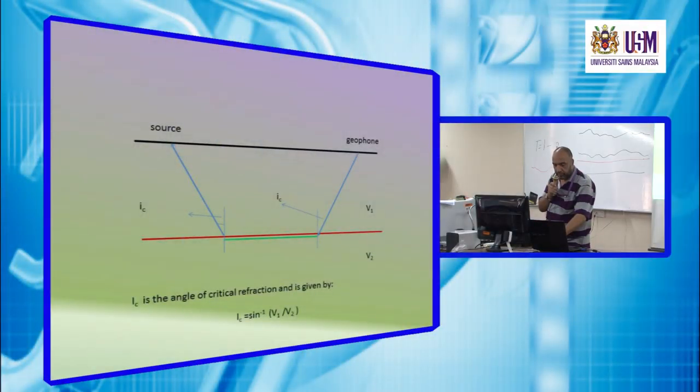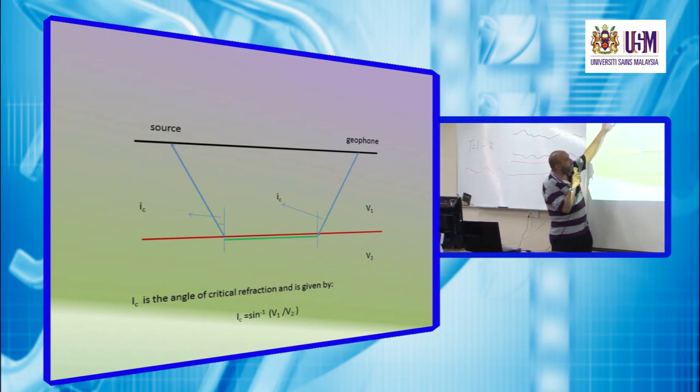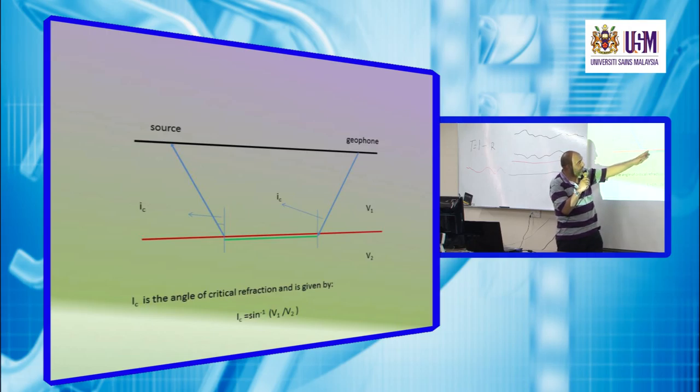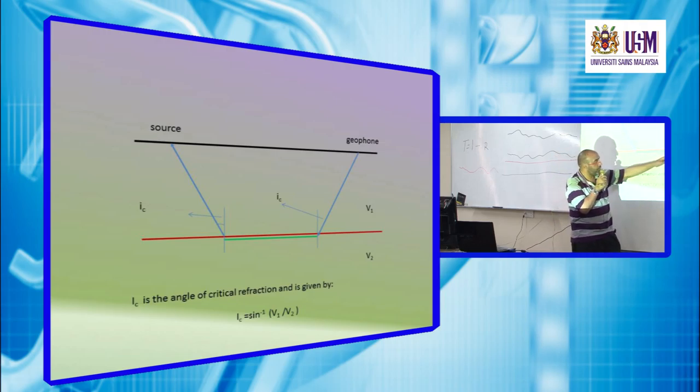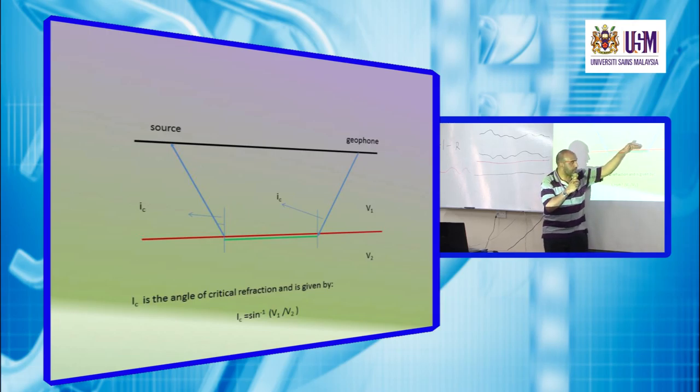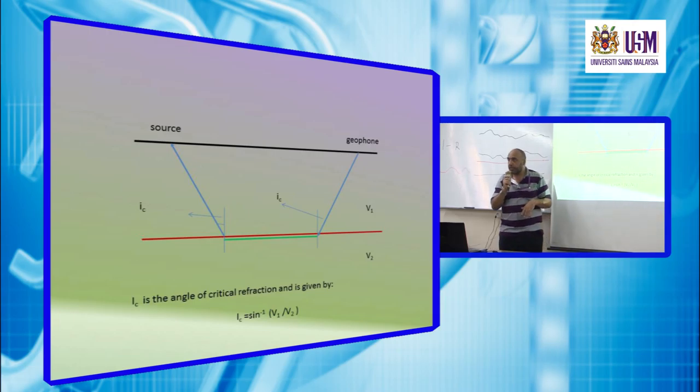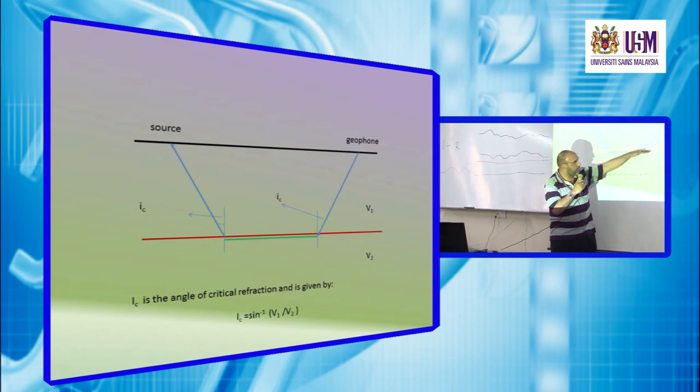And this figure will show us the situation. The incidence here, this is the IC, critical angle of refraction, which results in we have 90 degree refraction in the second media. This ray acts as ray incident at the interface with an angle equal 90 degree, which means it will refract back to the surface with an angle IC. This is the case for flat horizontal interface. This part is called head waves.